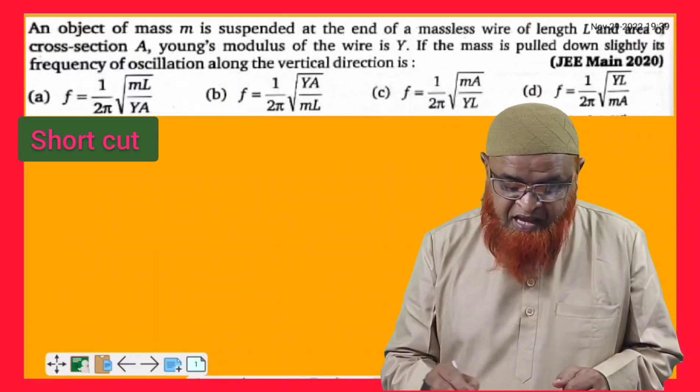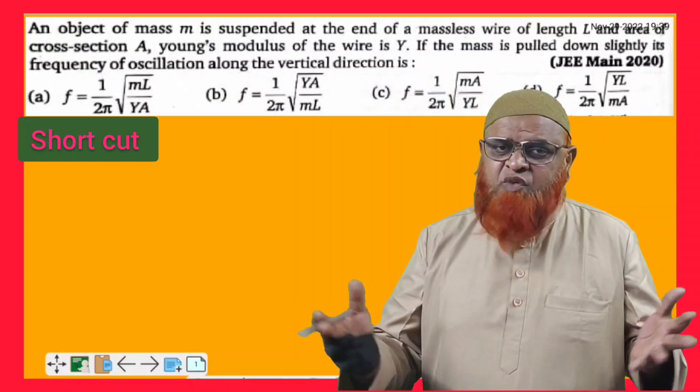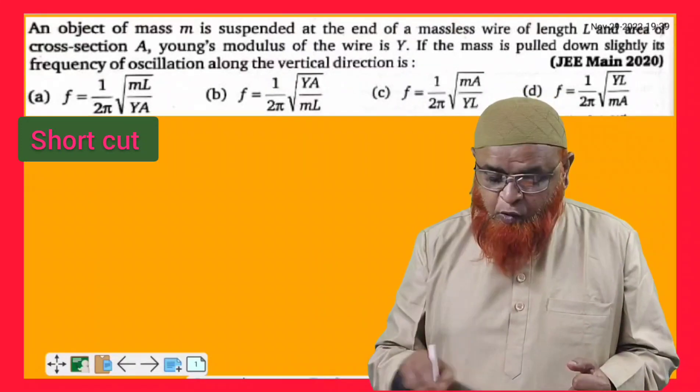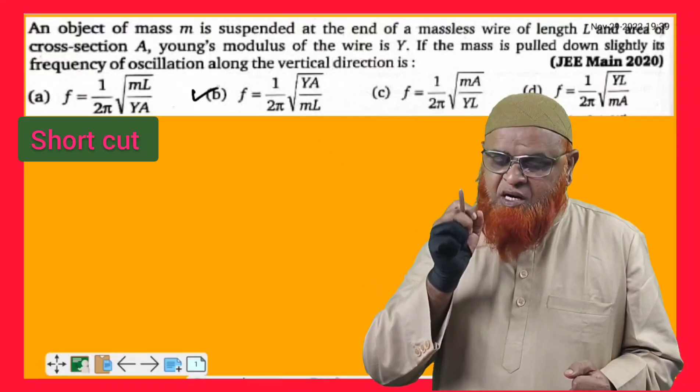See this problem here which is given. It is asking us to find out the frequency. So, general method will take a lot of time. But when you see the options by observations, you will get a shortcut method.